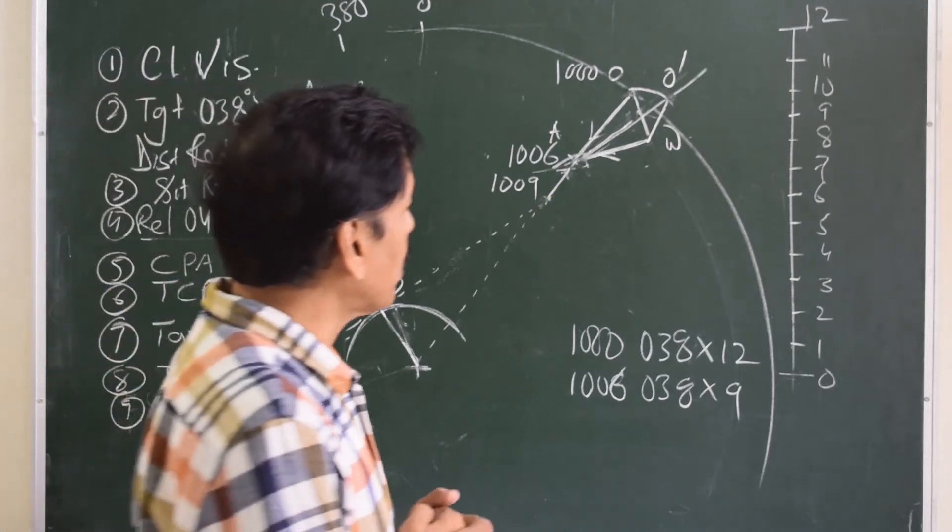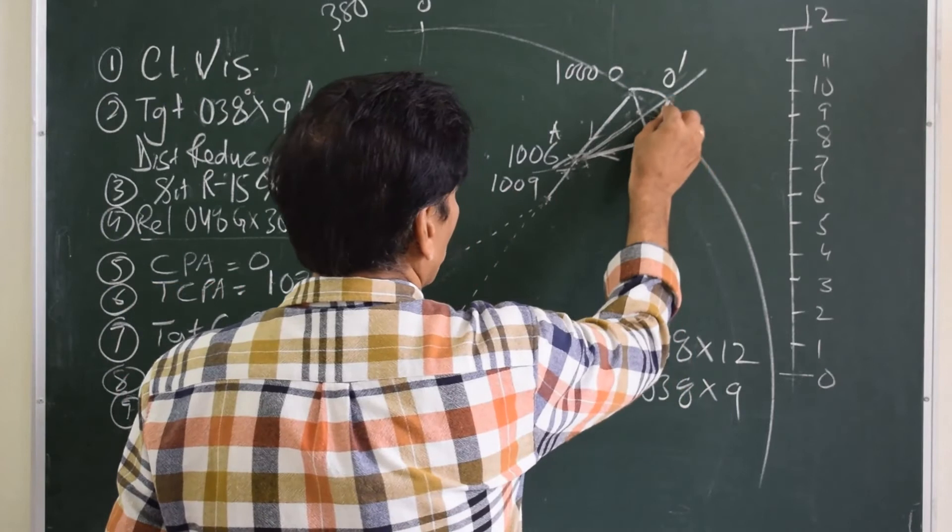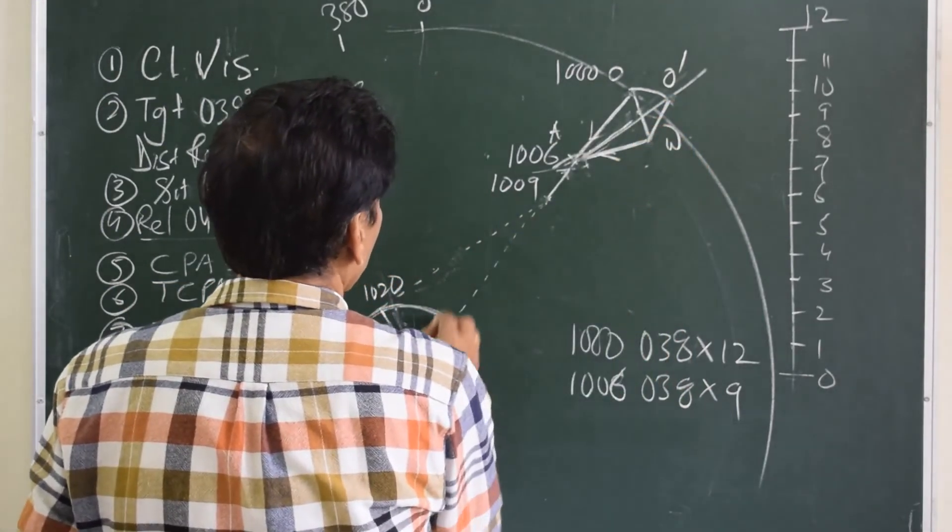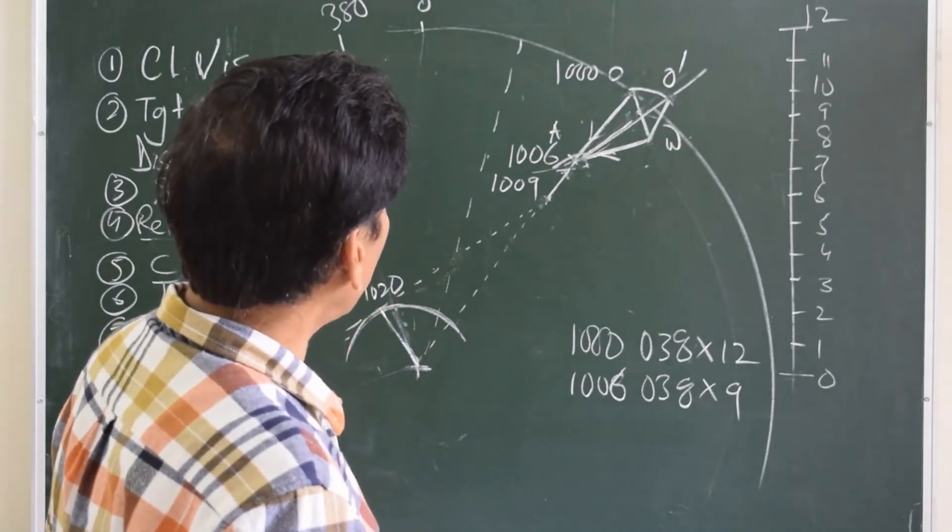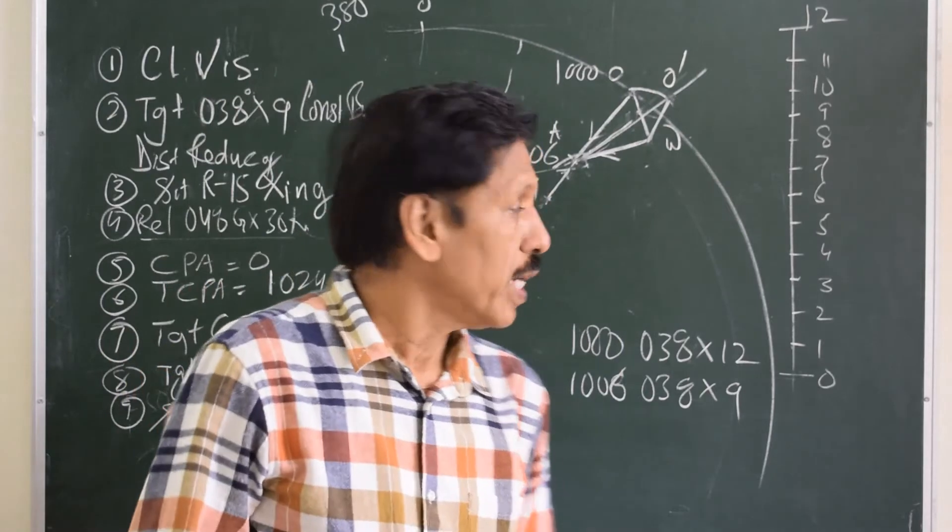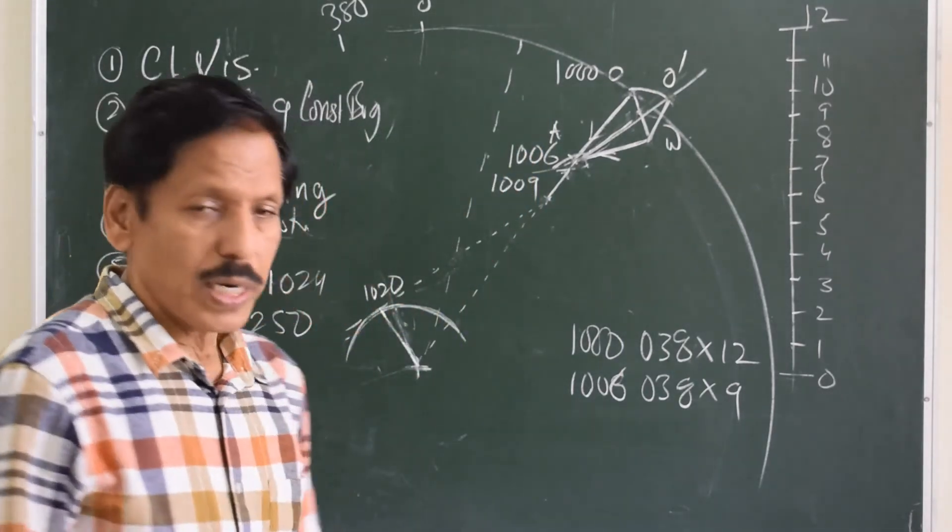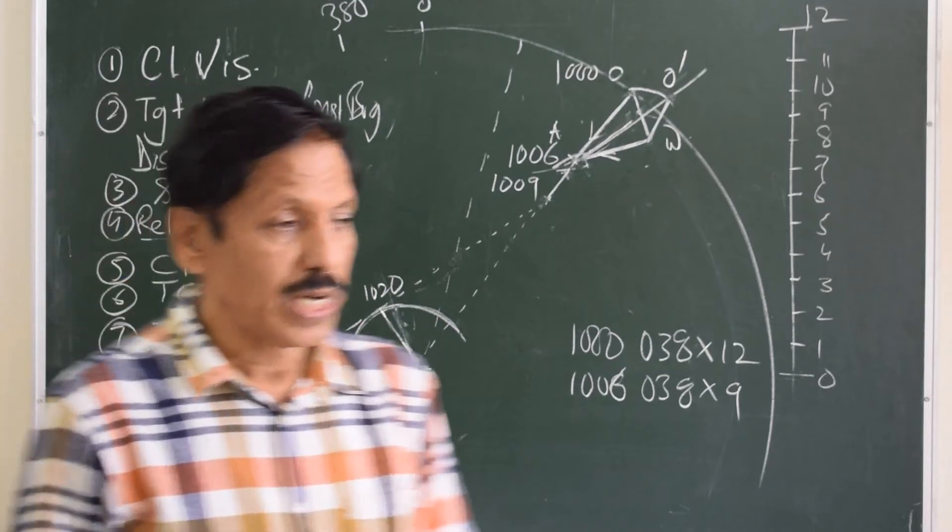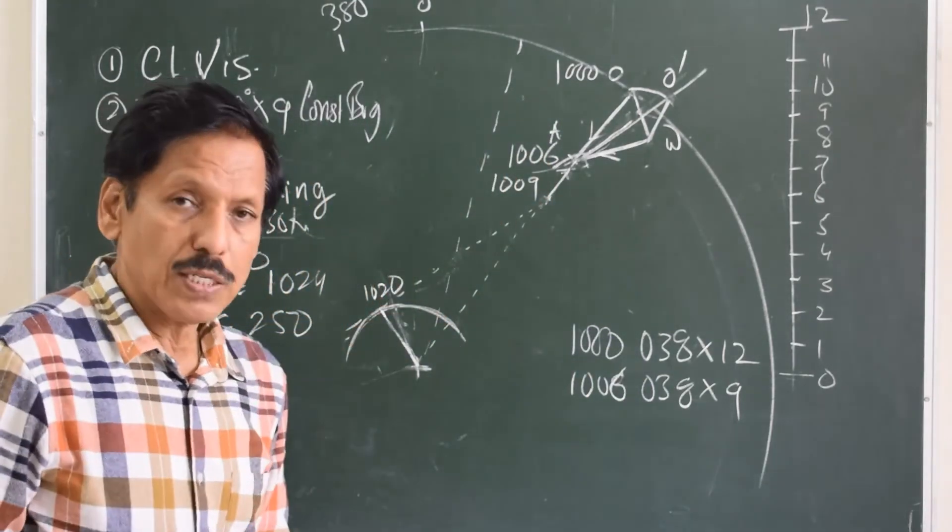Now this was the action. And if I want to know what is the course, what I do is put the parallel rule here and place it over here. So looks like 18 degrees, 018. That means the course, the new course in order to have a CPA of 2 miles will be 018. That means an alteration of 28 degrees is required to keep target 2 miles off.